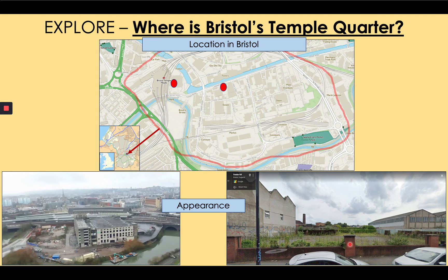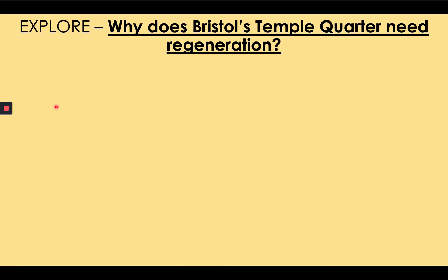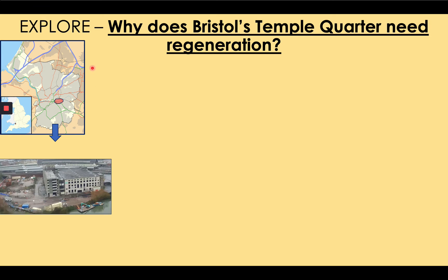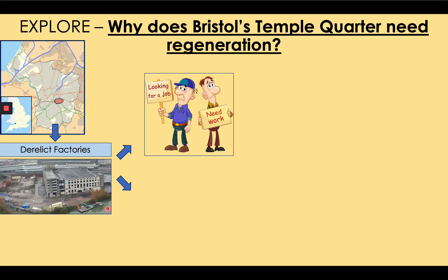This area is extremely important to Bristol — not only in the past but it's also extremely important that it is improved. None of Bristol's brownfield sites are as in need of regeneration as Temple Quarter. The derelict factories in Temple Quarter have led to significant rates of unemployment in the area, similar to how the population of Fillwood has high rates of unemployment and low incomes because they worked in the secondary sector in places like the tobacco factory which are now no longer in use. Because of the high unemployment, people have lower incomes.